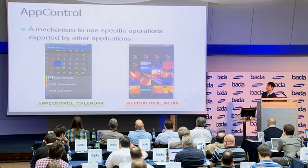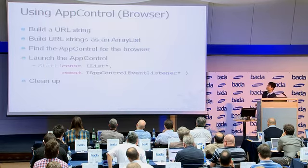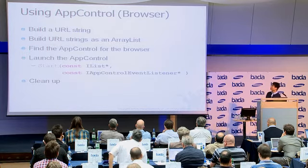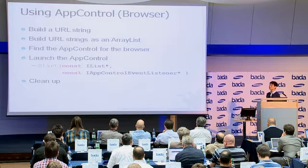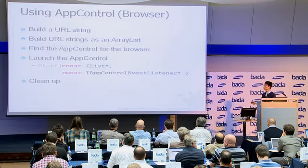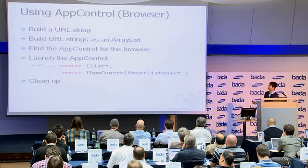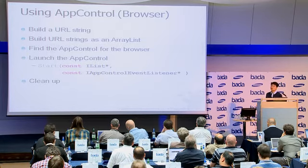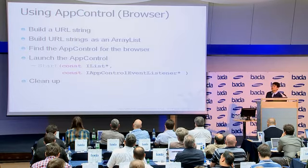Let me explain how to code using the app control for the browser. To use app control, you need five steps, but don't worry, it's not complex. The important steps are just two: finding the app control and then launching the app control. To open the browser, you must provide the URL.